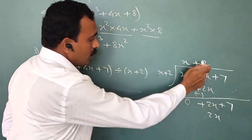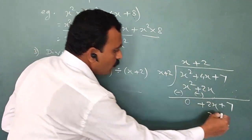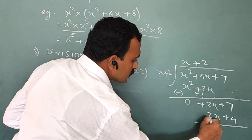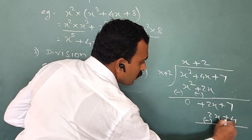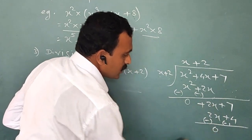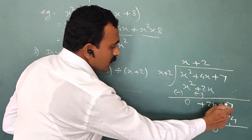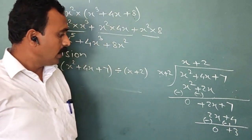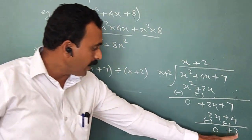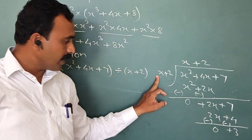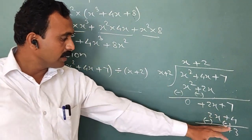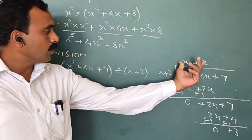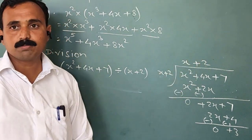Now 2 multiplied by x = 2x, and 2 multiplied by 2 = 4. Apply the opposite sign: 2x - 2x = 0. Then 7 - 4 = +3. Now here the index is smaller than the divisor, therefore 3 is the remainder. The quotient is x + 2.